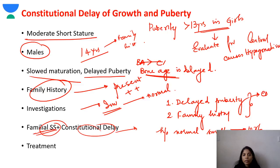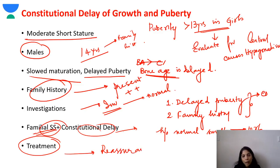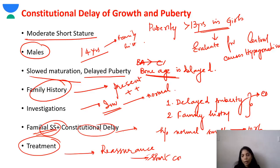Treatment for constitutional delay is reassurance. If the child or parents want to hasten growth, you can give a short course of low-dose androgens. The final height will not change with this intervention.